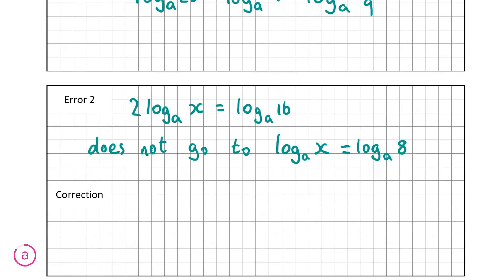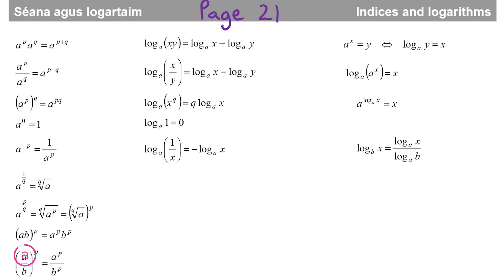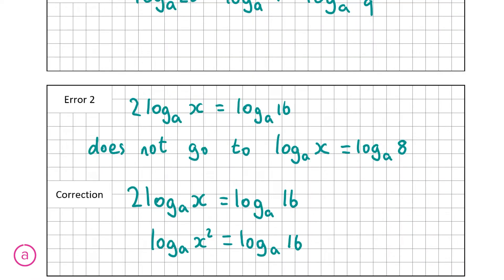Let's look at the formula and tables book again to see the correct way to handle this. This time it's the third rule: log_a of x to the power of q is equal to q times log_a of x. We have 2 log_a of x, and we can see that this should go to log_a of x squared — that is the correct way to do that step. So that's the answer for part A of the question, and now we're going to move on to part B.